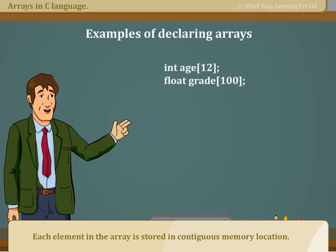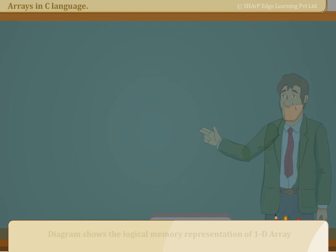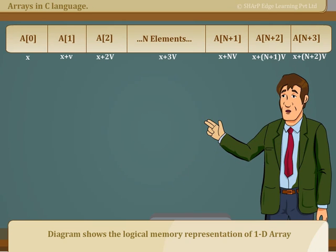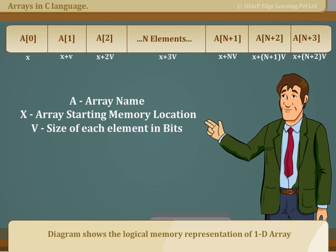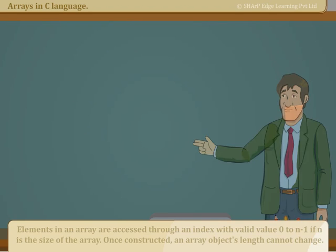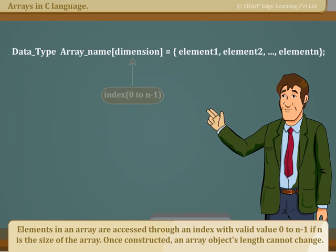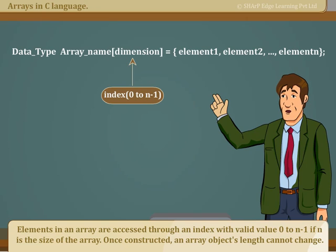Each element in the array is stored in a contiguous memory location. Diagram shows the logical memory representation of 1D array, with array name X, array starting memory location, and V is size of each element in bits. Elements in an array are accessed through an index with valid value 0 to n-1 if n is the size of the array. Once constructed, an array object's length cannot change.